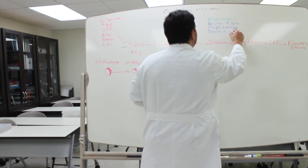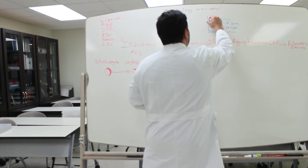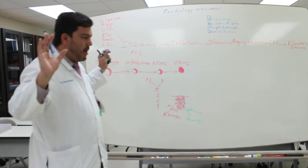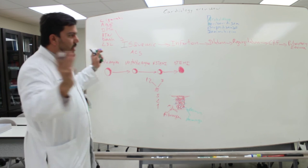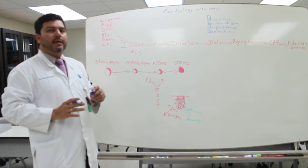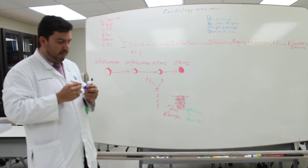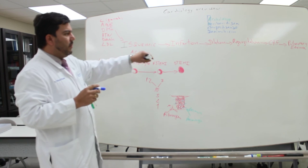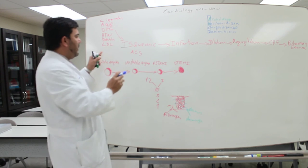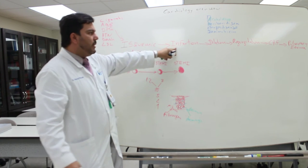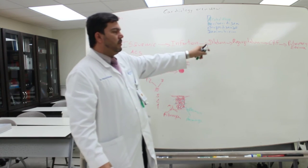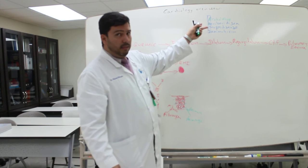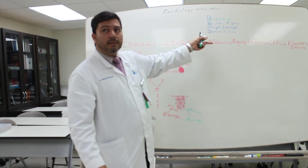Doxorubicin is another cause of dilation. When you study for this exam, put everything on one page as much as you can — that way you can remember things. Remember: ischemia can cause infarction, infarction at some point can cause dilation, but there are also other conditions that can cause dilation.